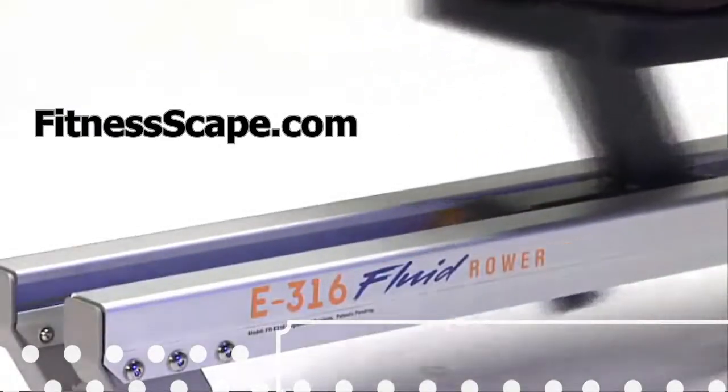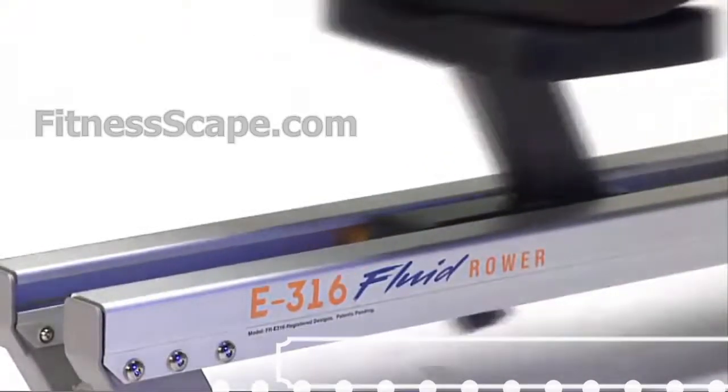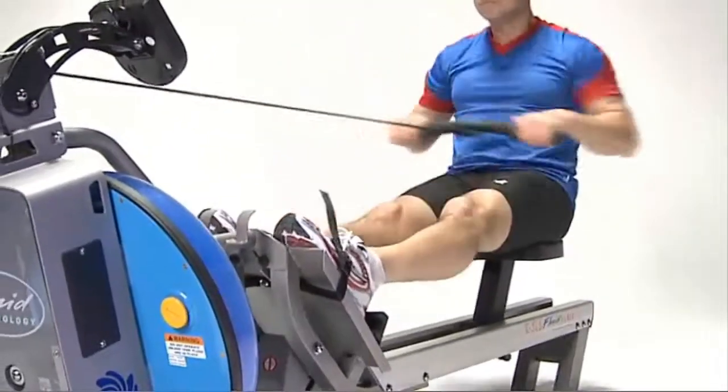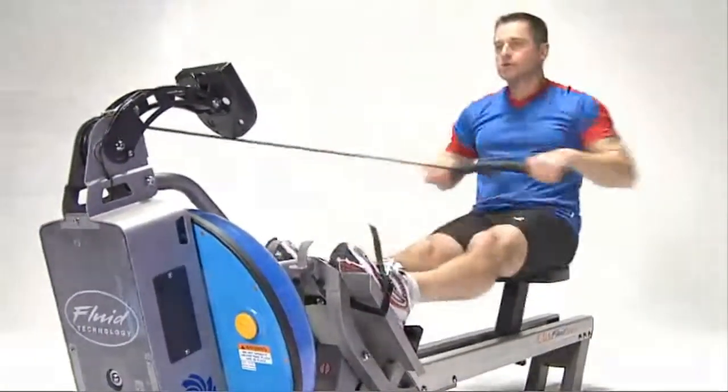The E316 has an even sturdier dual rail system of two anodized aluminum rails, creating a stable and smooth carriageway for seat glide.